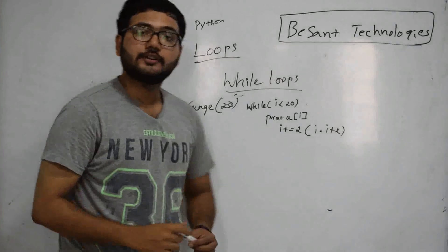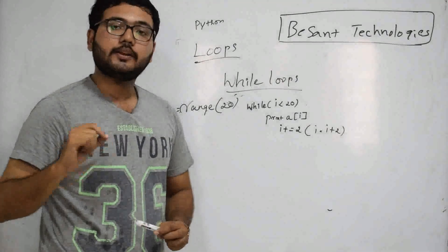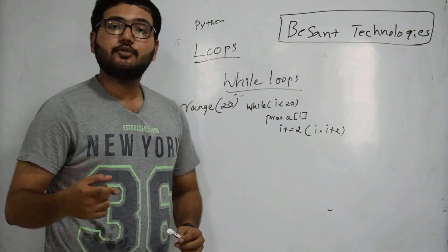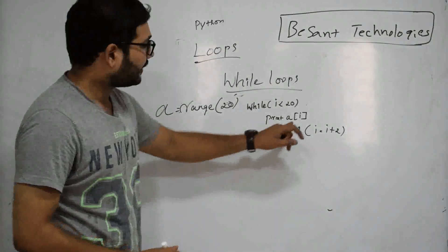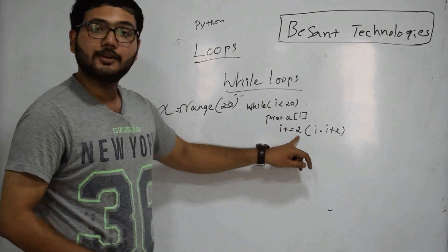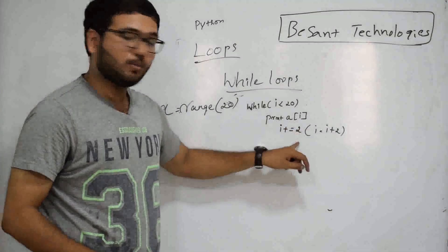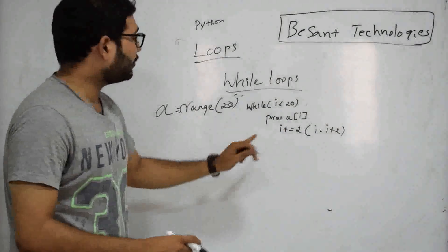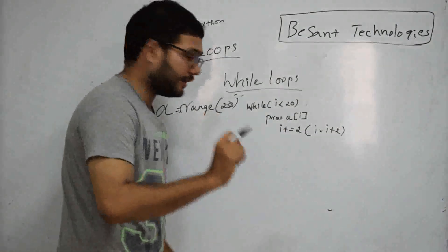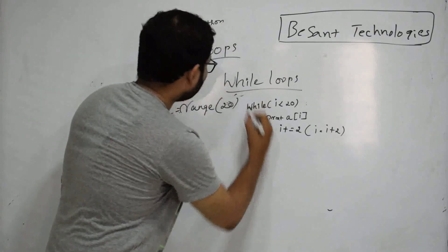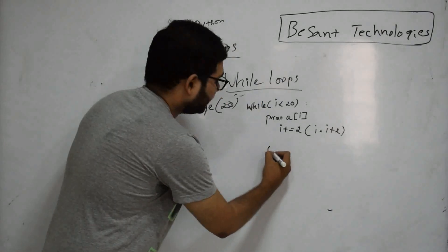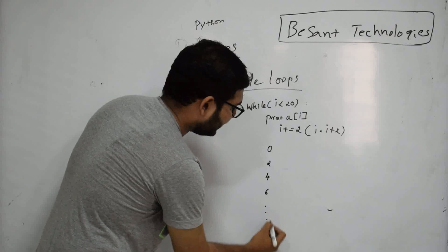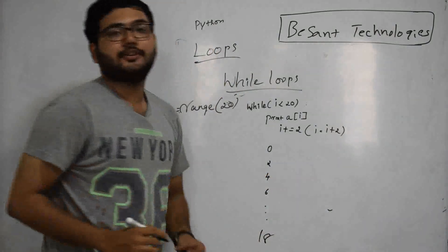What we are doing is each time when the loop executes, we are increasing the value of i by 2. So first time a of 0, next time it will be a of 2, next time it will become a of 4. It will print each and every time all the even numbers like 0, 2, 4, 6 till 18.